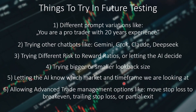To close out the video, here are a few things I'm thinking about trying in a future testing video. First, we should try a different prompt variation — for example, sending a sentence like 'you are a pro trader with 20 years experience.' When I do work with AI, I usually use these kinds of sentences; for example when I do coding I tell it 'you are a pro Pinescript coder with 20 years experience.' I don't know if it helps, but it looks like it does. Second, we should try out other chatbots like Gemini, Grok, Claude, or Deepseek — maybe some are better at this task than others. Third, trying different risk-reward ratios or letting the AI decide altogether — in this test I used a fixed 1 to 1, but maybe ChatGPT would have used a 1 to 2, a 1 to 3, or a 0.5 to 1.